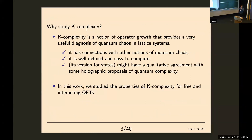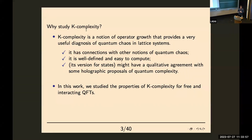Why study K-complexity? K-complexity is a notion of operator growth that provides a very useful diagnosis of chaos in lattice systems. It has connections with other notions of quantum chaos, it's easy to compute and well-defined. Its version for states might have some qualitative agreement with holographic proposals of quantum complexity. There are at least two notions of Krylov complexity: one for states, another for operators. The complexity of operators has connections with OTOCs, and complexity of states has connections with other measures of quantum chaos, like level space statistics.